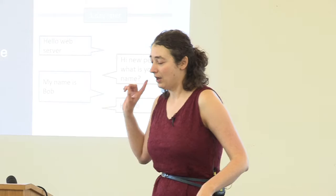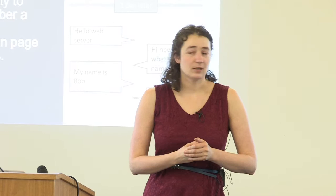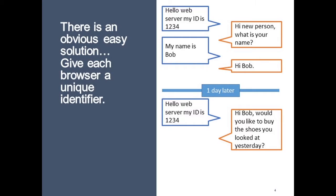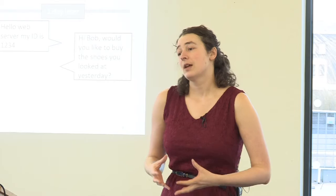Lou — whose last name I can't pronounce — was an engineer at Netscape who invented the web cookie and was trying to solve this exact problem. The very obvious solution to most technical people was: give every web browser a unique identification code. The browser would tell the server 'I'm browser 1234,' and the server would look it up in a database and say, 'oh I remember you, you're Bob, you were looking at shoes last time.' However, this has serious privacy problems.